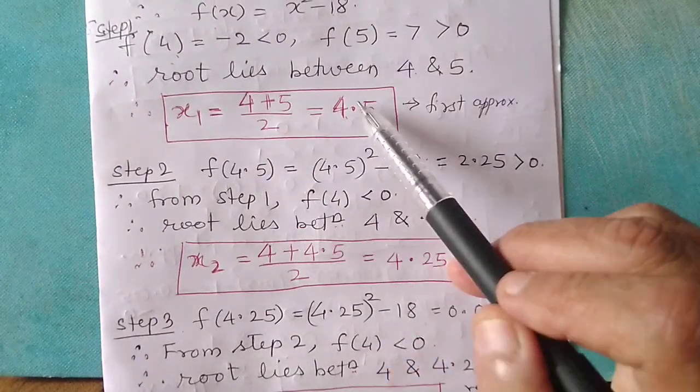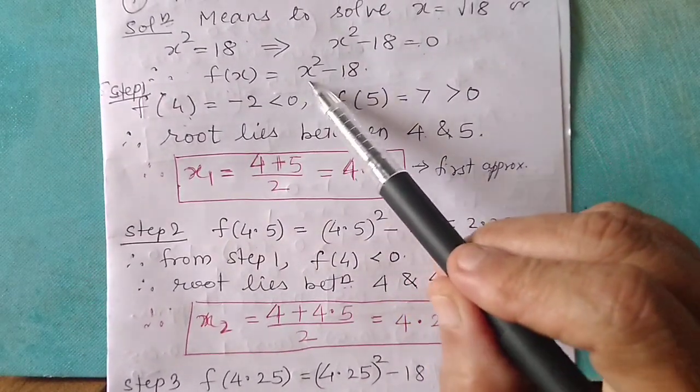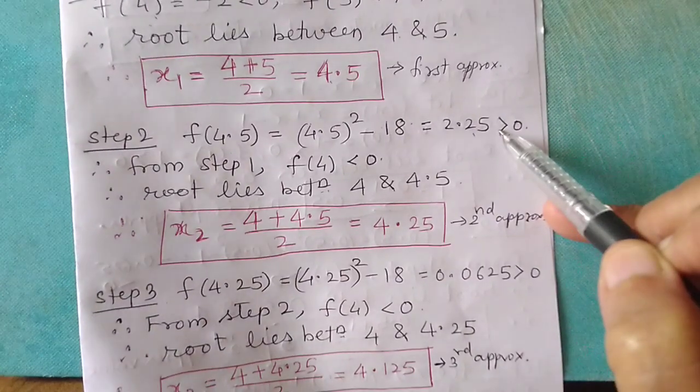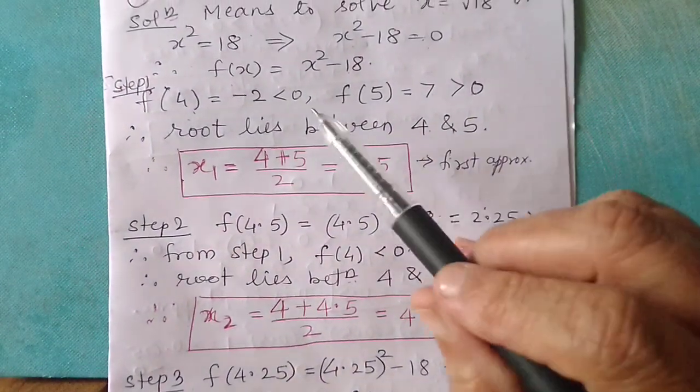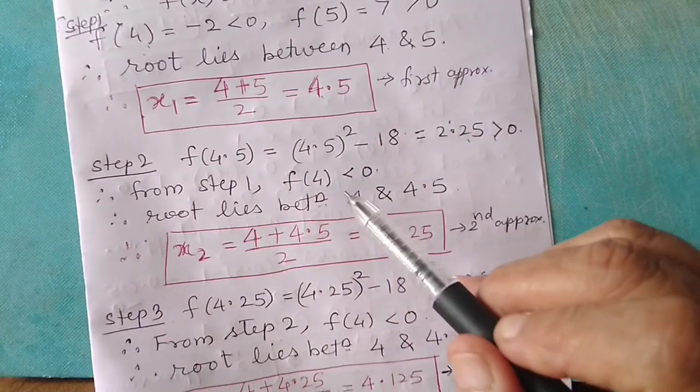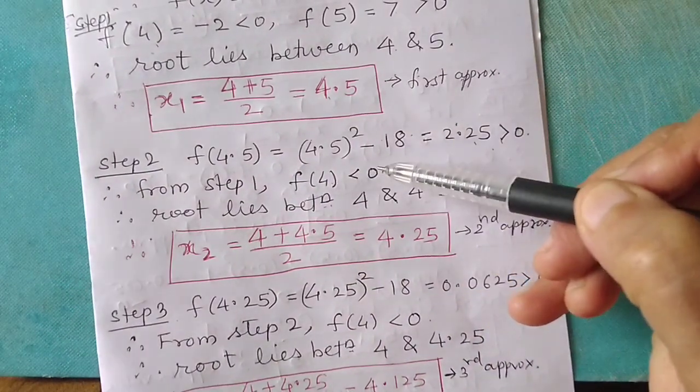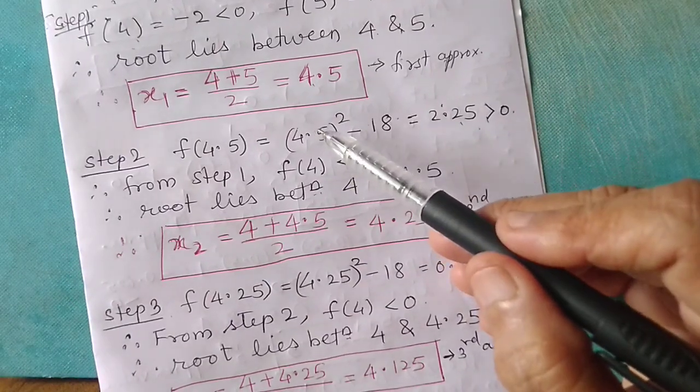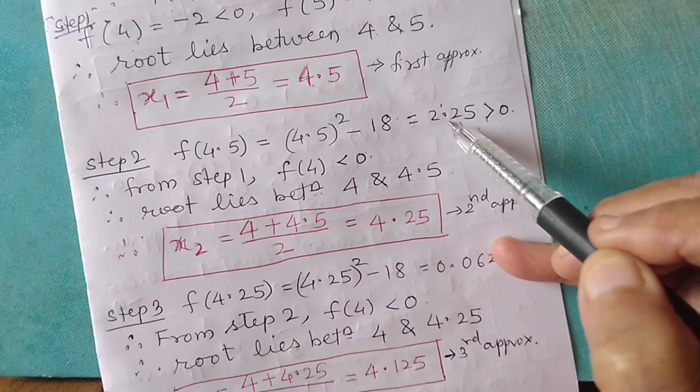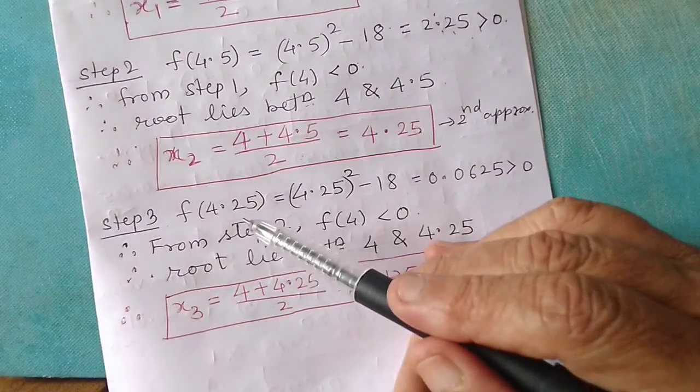Now we will find f of 4.5, which is 4.5 square minus 18, which equals 2.25 and is greater than 0. Since this is greater than 0, we look for where it is less than 0, which is f of 4. So we take the combination of f of 4.5, which is greater than 0, and f of 4, which is less than 0. The midpoint of 4 and 4.5 is 4 plus 4.5 upon 2, which equals 4.25. This is the second approximation.